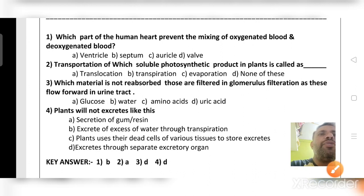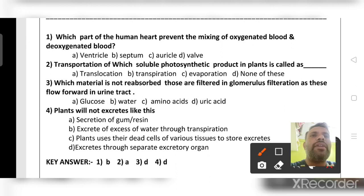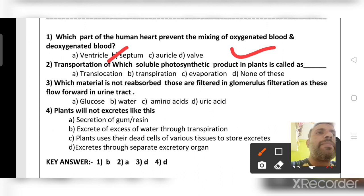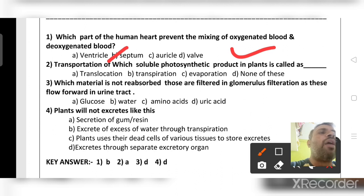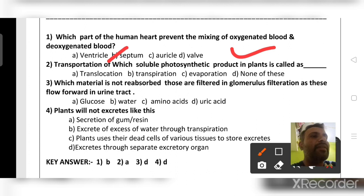Which part of the human heart prevents mixing of oxygenated and deoxygenated blood? The right answer is the septum. The septum separates the right part of the heart from the left part. Auricles are the upper chambers, ventricles are the lower chambers, and valves stop the backward flow of blood in blood vessels.